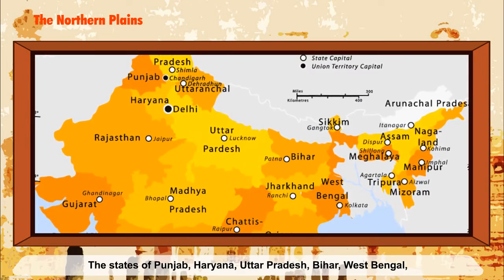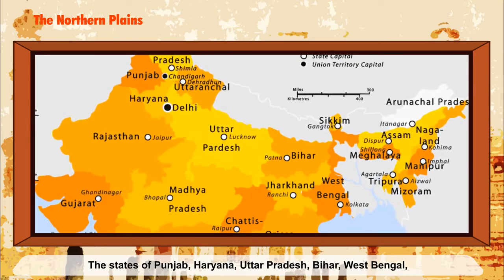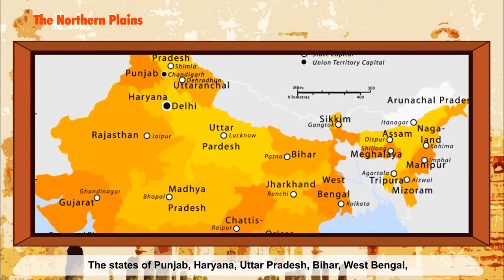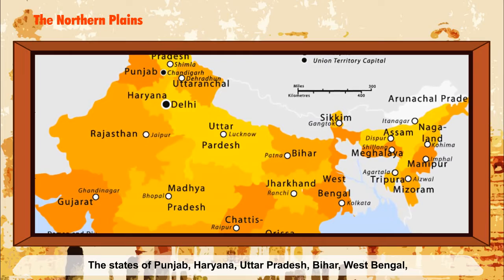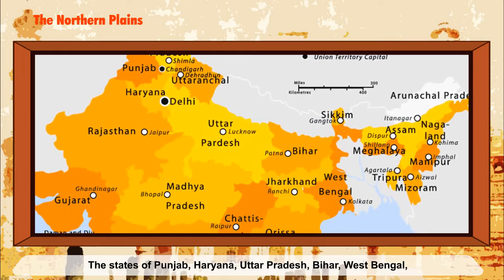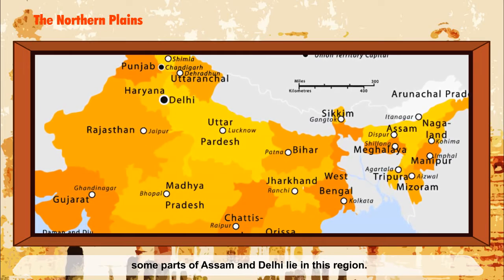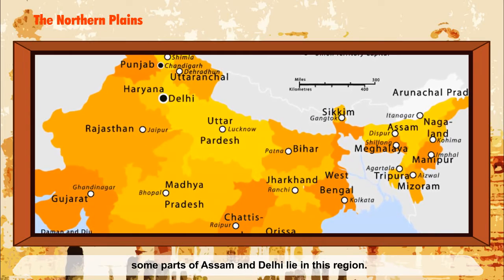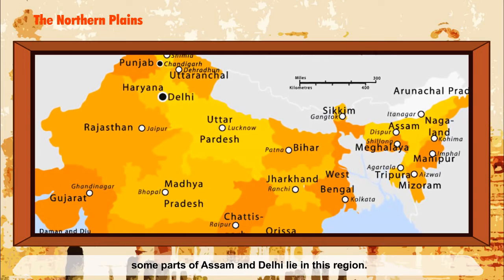The states of Punjab, Haryana, Uttar Pradesh, Bihar, West Bengal, some parts of Assam, and Delhi lie in this region.